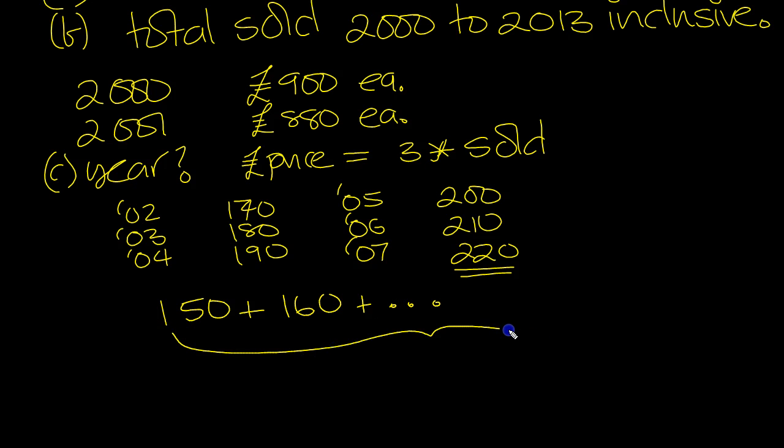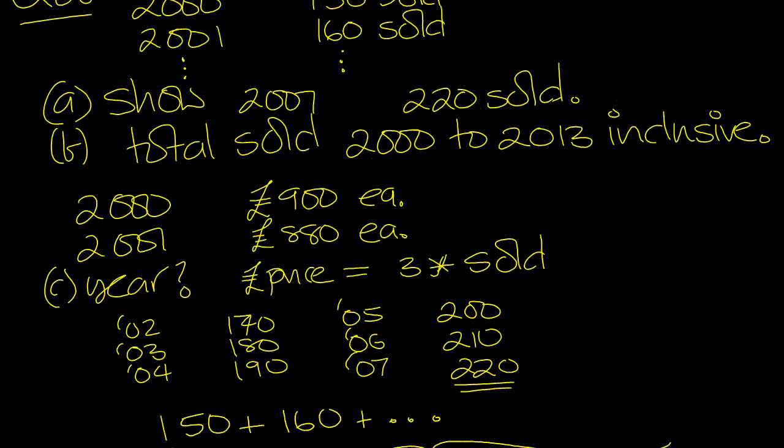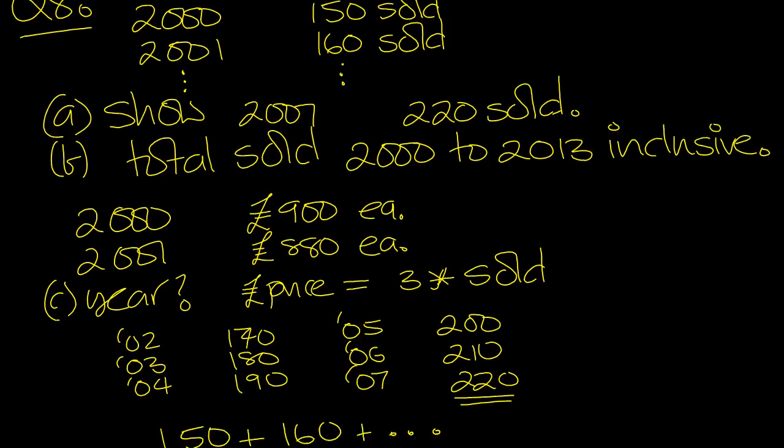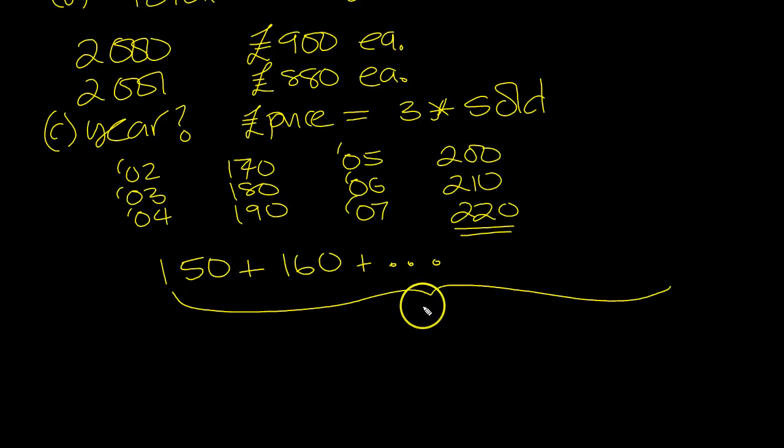So you've got 150 plus 160 plus dot dot dot. Now how many terms? 2000 to 2013, that is 14 terms, isn't it? 14.